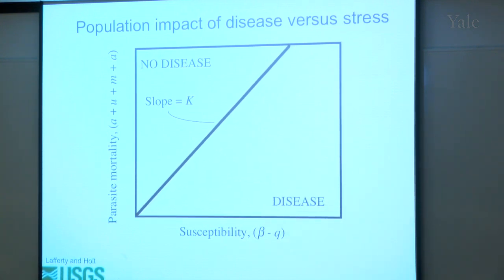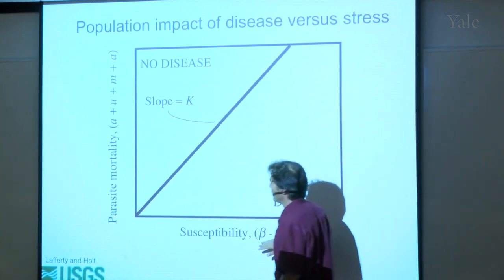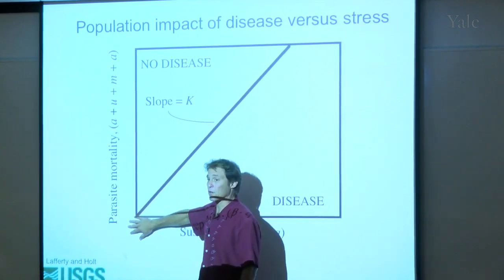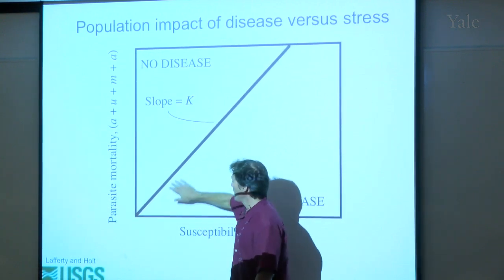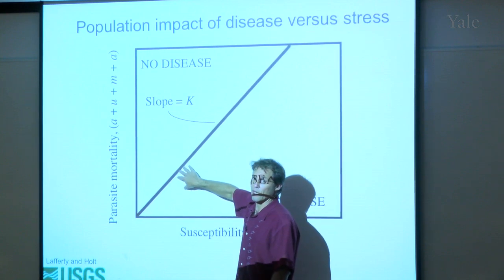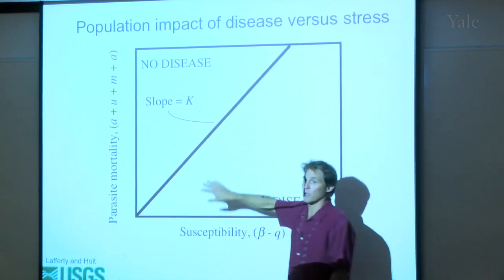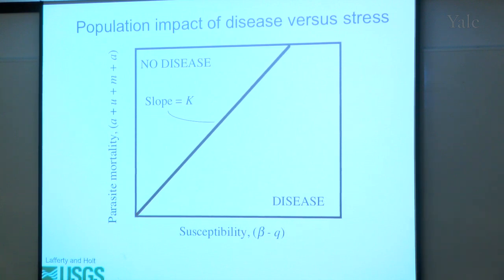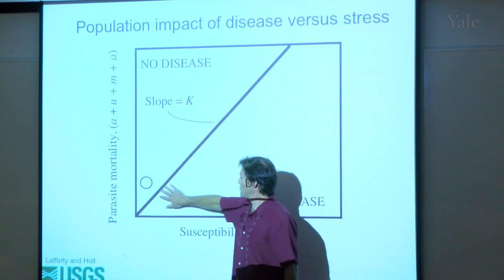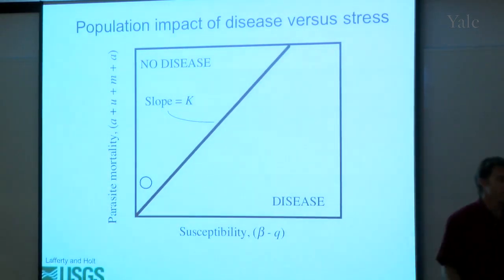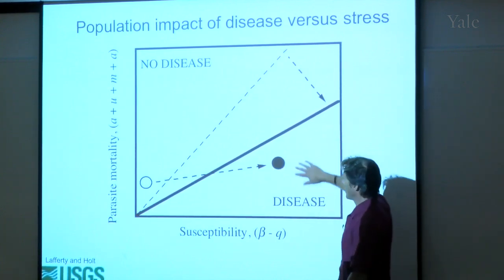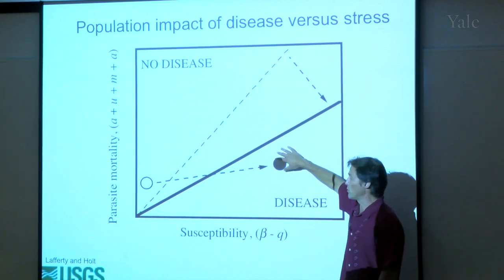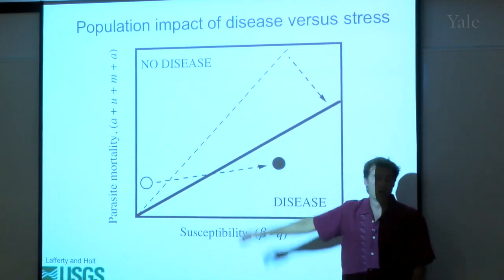We can ask questions about stress, because stress might interact with all three factors. Stress might increase host susceptibility, increase parasite mortality through host or parasite mortality directly, and also affect host carrying capacity — we often assume it might decrease carrying capacity. Here's an example: start with a population not subject to infectious disease, stress the system by decreasing carrying capacity, increasing parasite mortality, and increasing susceptibility, and we've moved from not having disease to having disease.